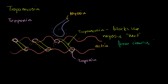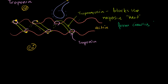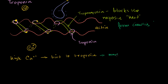The only way to unblock this is for the troponins to change their conformation, and the only way for them to do that is if we have a high calcium ion concentration. With enough calcium ions, they bond to the troponin, changing its conformation enough to move the tropomyosin out of the way.